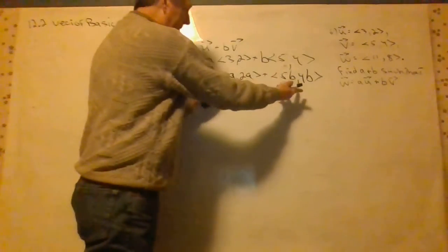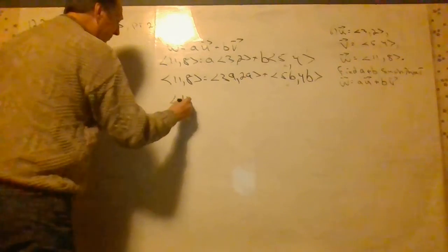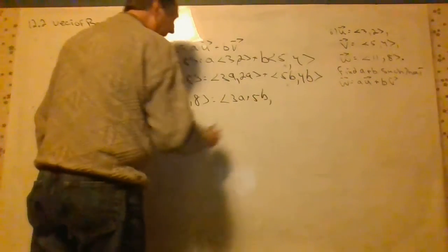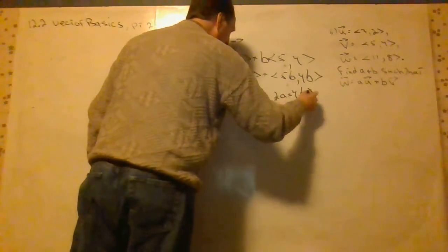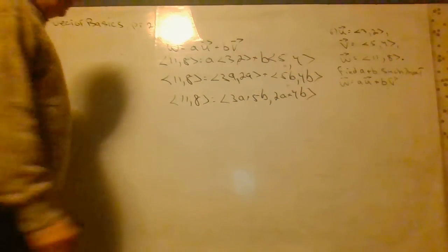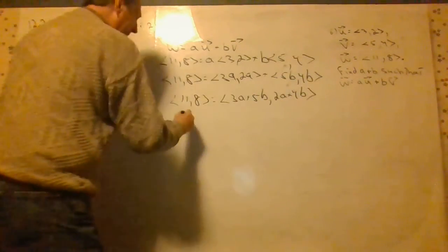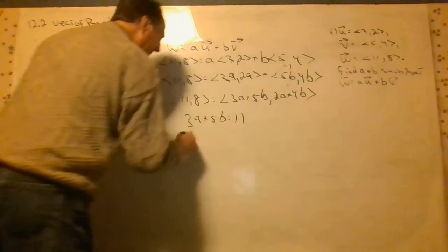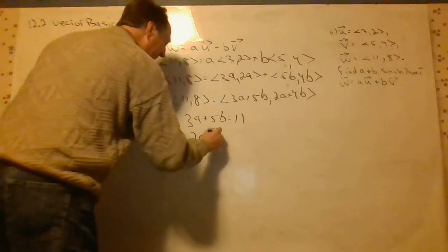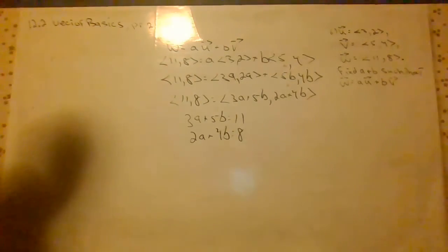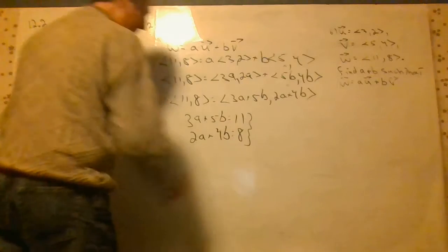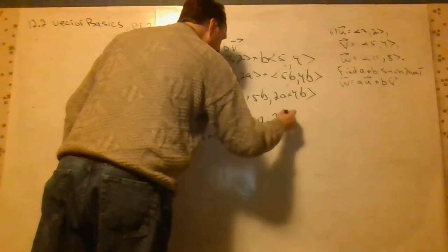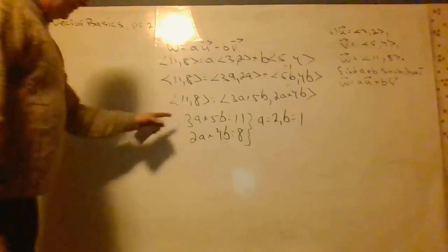We also have vector addition. And so we can combine those two. (11, 8) equals (3a plus 5b, 2a plus 4b). And then now we can set this equal to 11, set this equal to 8. 3a plus 5b equals 11. And then 2a plus 4b equals 8. And then we have two equations, two unknowns. And you can solve it. And it turns out we have a equals 2, b equals 1. I'll leave the actual ninth grade algebra to you.